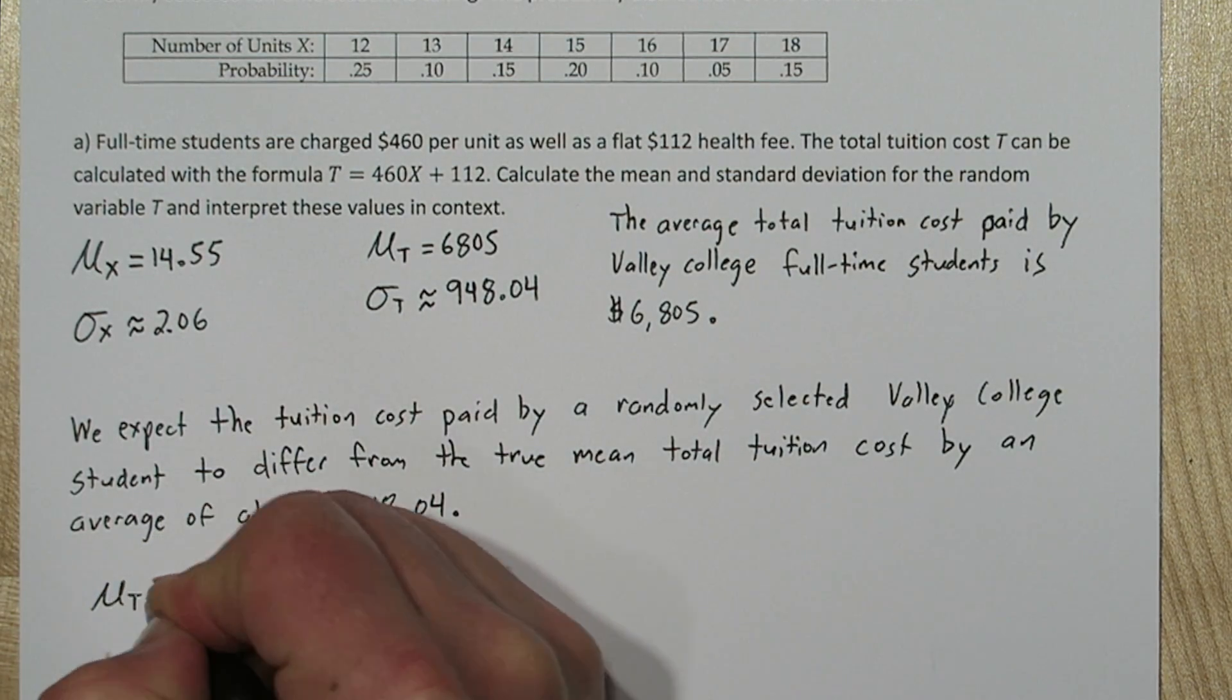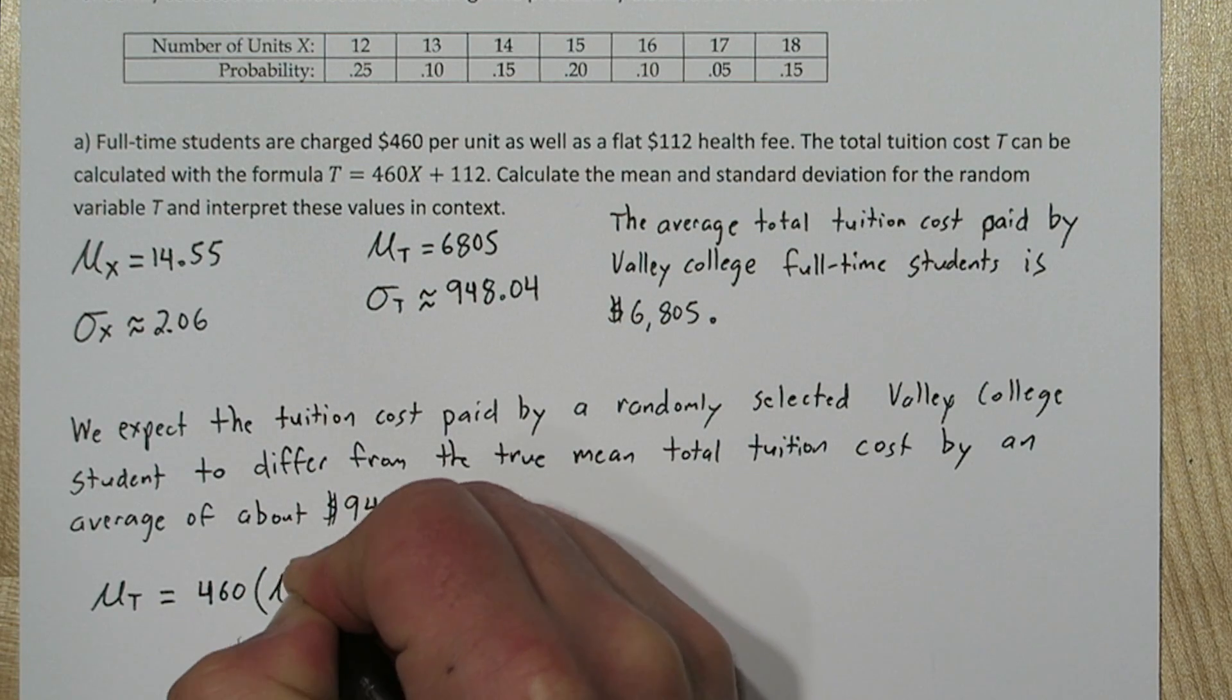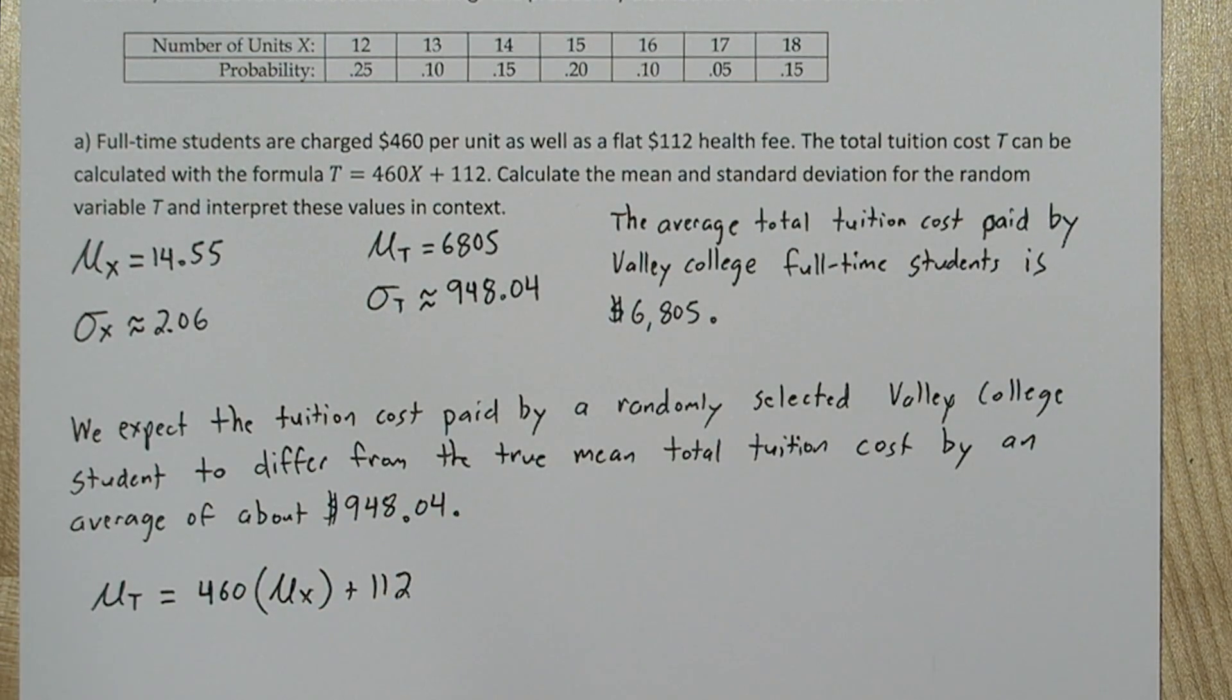One thing to notice here is that the mean of our random variable t is simply the mean of our random variable x multiplied by 460 and then increased by 112. In other words, we can just apply the transformation formula from units to total tuition cost to our old mean to get the new mean.